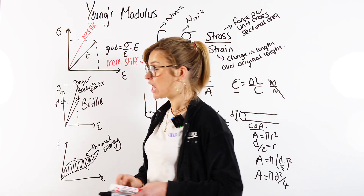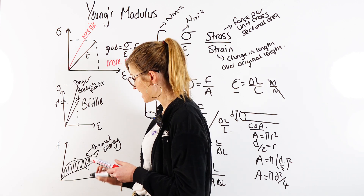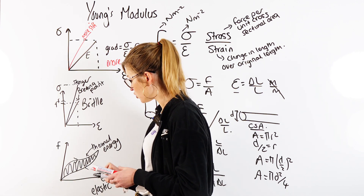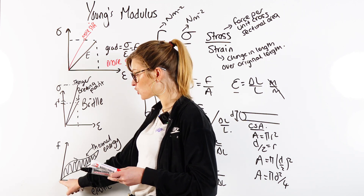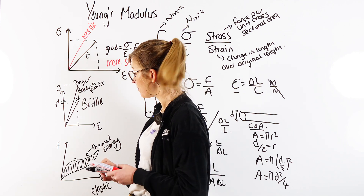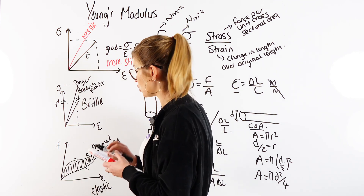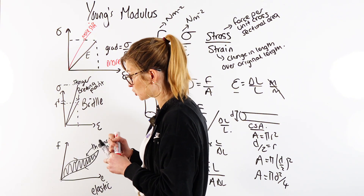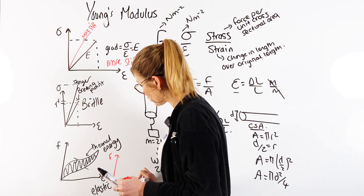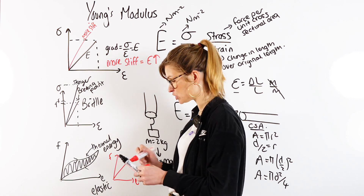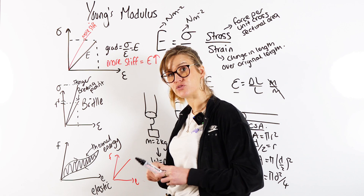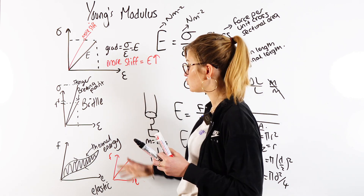From a material like this we know it is elastic, because when we remove the forces it returns to its original length. However, it does not follow Hooke's Law because the graph is not a straight line from the origin. Hooke's Law gives a straight line from the origin on a force-extension graph, and clearly this curve doesn't follow that.